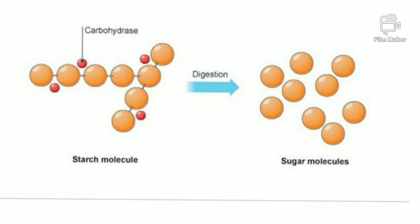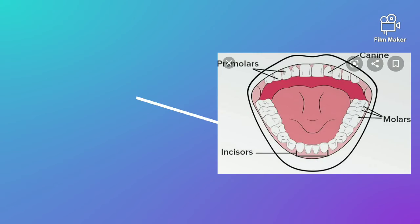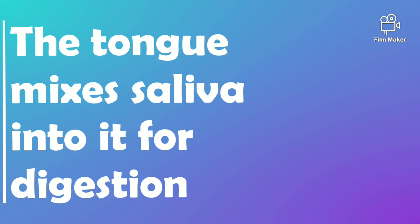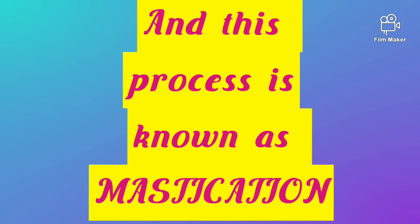As you can see in the picture, the oral cavity has a number of teeth and a muscular tongue. It is also where digestion begins, as the saliva breaks down the starch into sugars while chewing the food. The teeth help to cut and grind it into smaller pieces, and the tongue mixes saliva into it for digestion. This process is known as mastication.